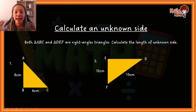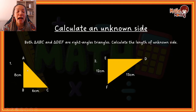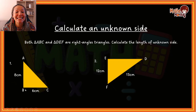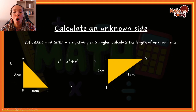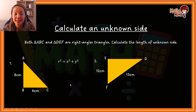Triangle ABC is a right angle triangle and we have to calculate the unknown side, which is AC. You're going to start by writing down the formula. If you are being asked to calculate the hypotenuse — the longer side opposite the 90 degree angle — you will use r squared equals x squared plus y squared. We have the two shorter sides: 8 and 6. We substitute those values for x and y.